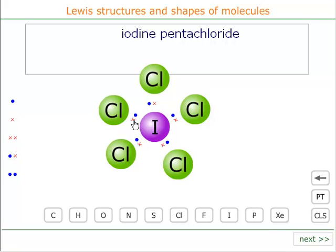Okay, now iodine, if we say iodine's electrons are the blue ones, there's 1, 2, 3, 4, 5. It's used. It's got two more. Now these two more will appear as a lone pair.